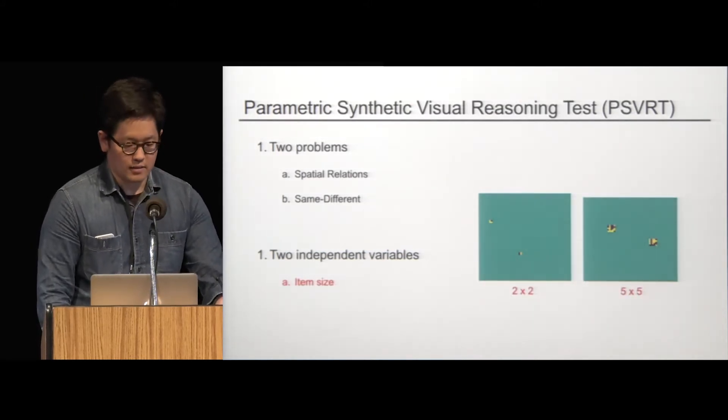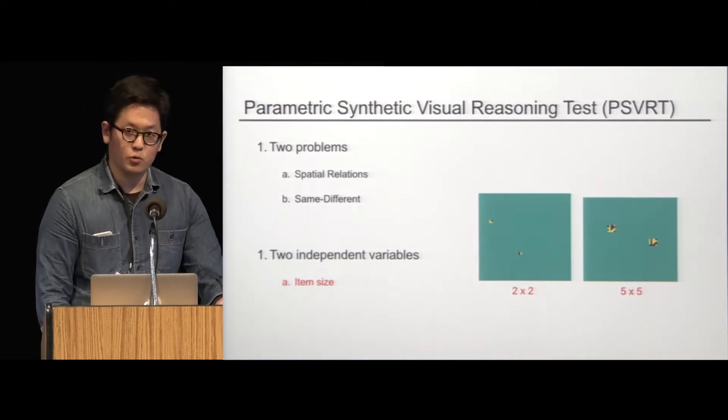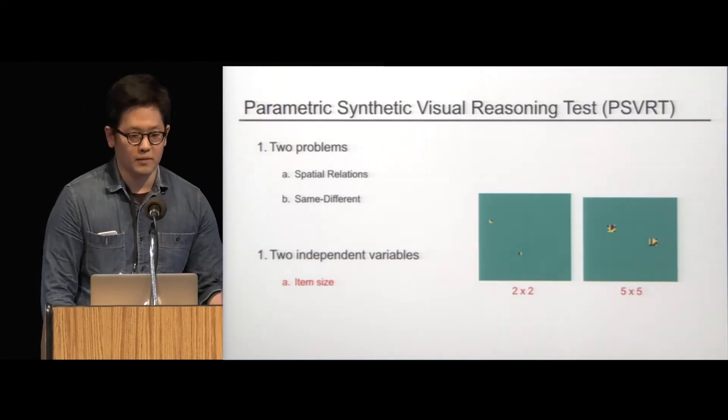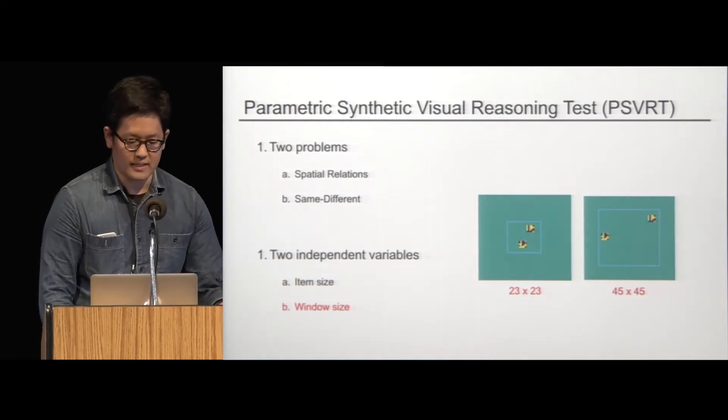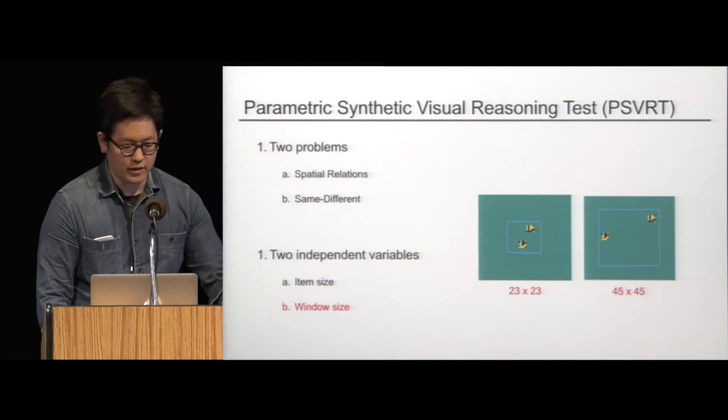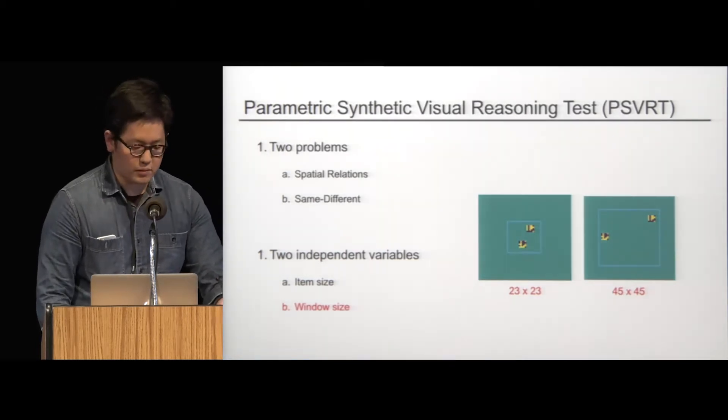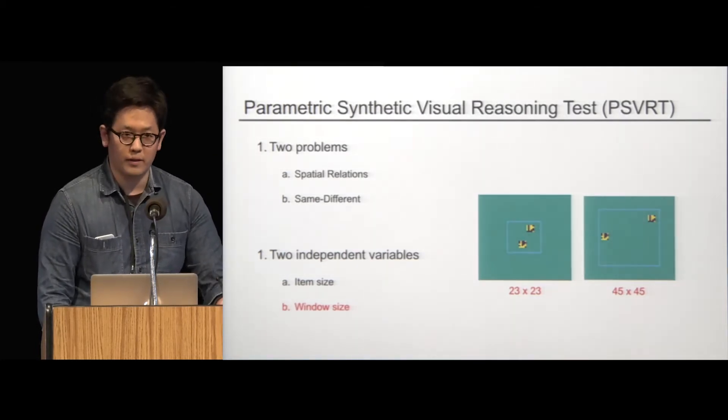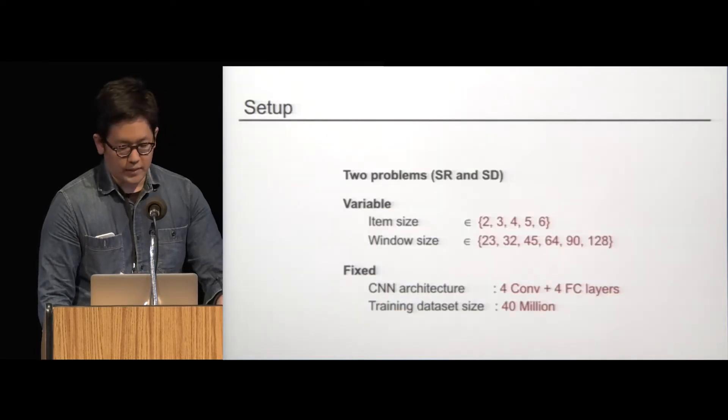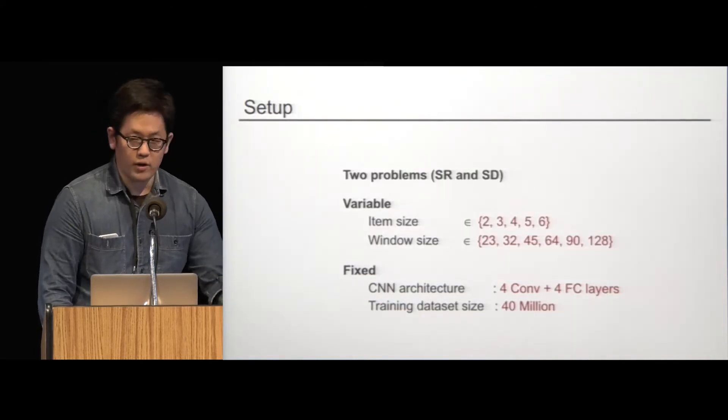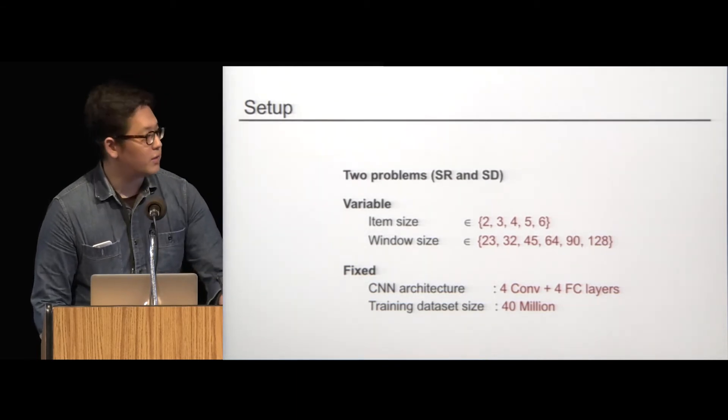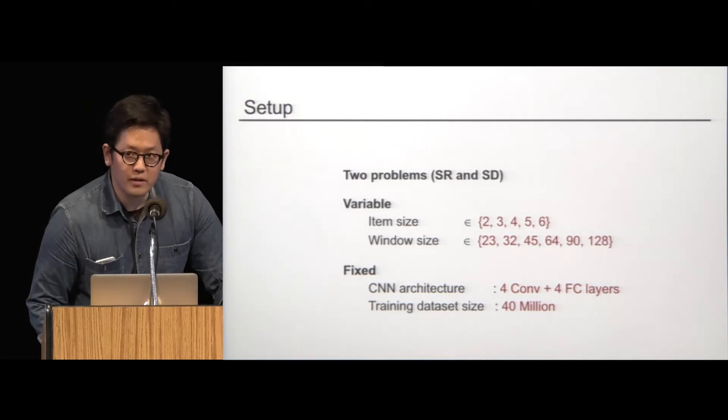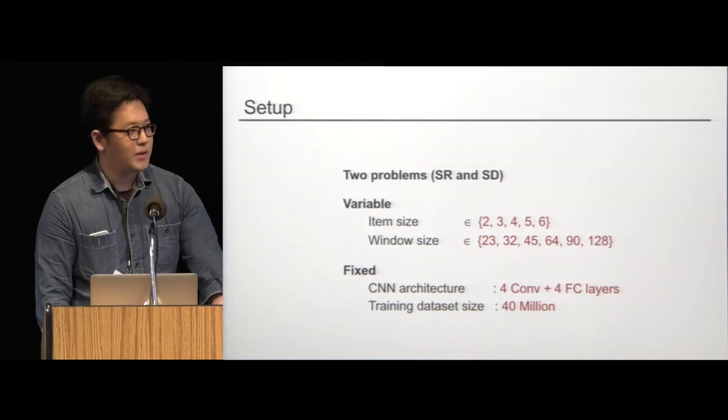And as we said, it's parametric tests. And the difficulty of each problem really is controlled by the amount of variability in the data set. And there are two parameters for this. One is called item size, which is the side length of each square bit pattern, which controls the input variability at the item level. And the other is called the window size, referring to the side length of the spatial boundary in which the two items are randomly placed, which controls the input variability at the level of position. Now, we ran a CNN on a range of different difficulty parameters. Forget the details. One thing I want to mention, 40 million training images, okay?